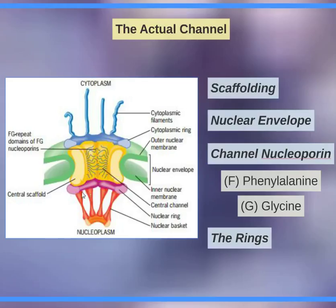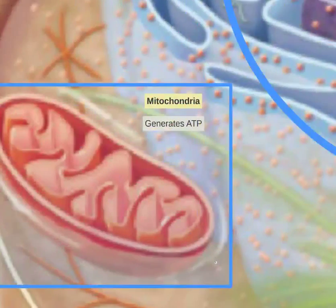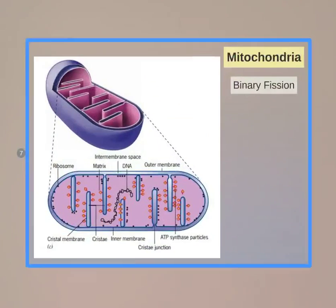The inner ring has the nuclear basket. We will move on to mitochondria now. Mitochondria generates ATP and is very much like its own bacteria. It's theorized that they used to be separate bacteria that invaded animal cells.